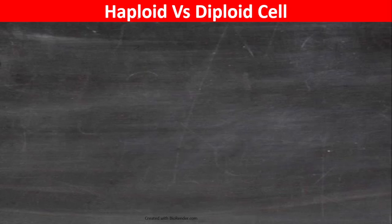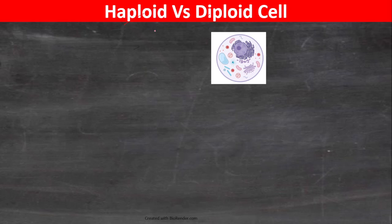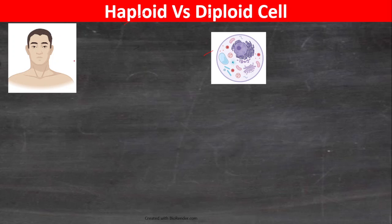In today's lecture, I'm going to talk to you about the differences between haploid and diploid cells. The cell is the smallest structural and functional unit of an organism, such as human beings.